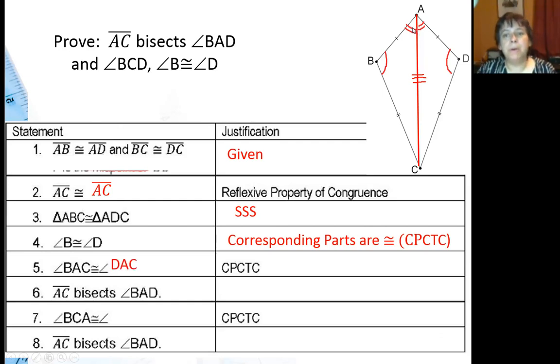Those are two corresponding parts of congruent triangles. This piece here corresponds to that piece. And since those two pieces are the same size, that means AC must be cutting this larger angle in half, which means that AC is bisecting BAD, by definition of an angle bisector.